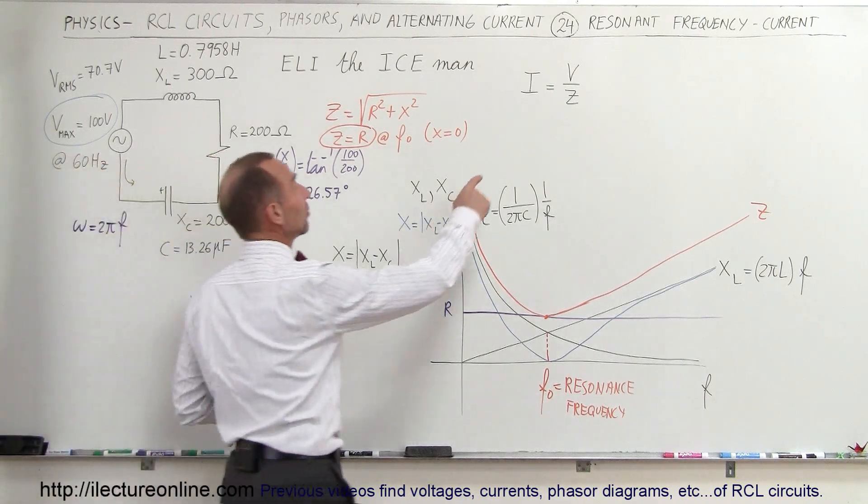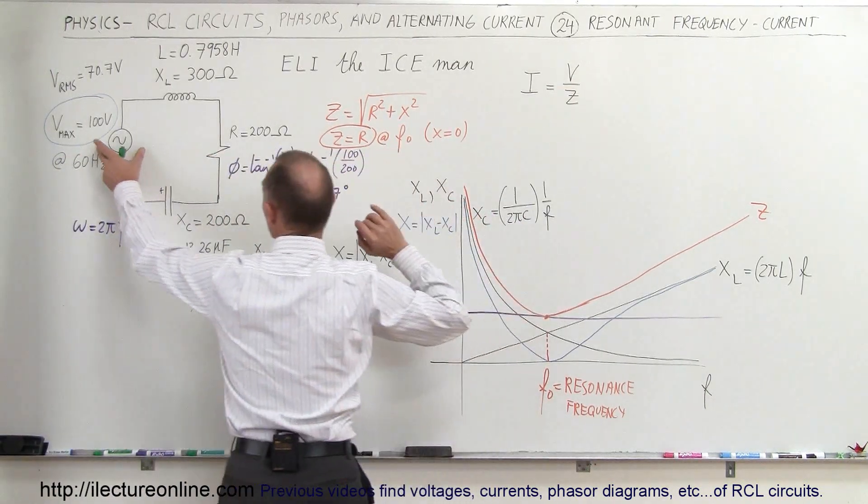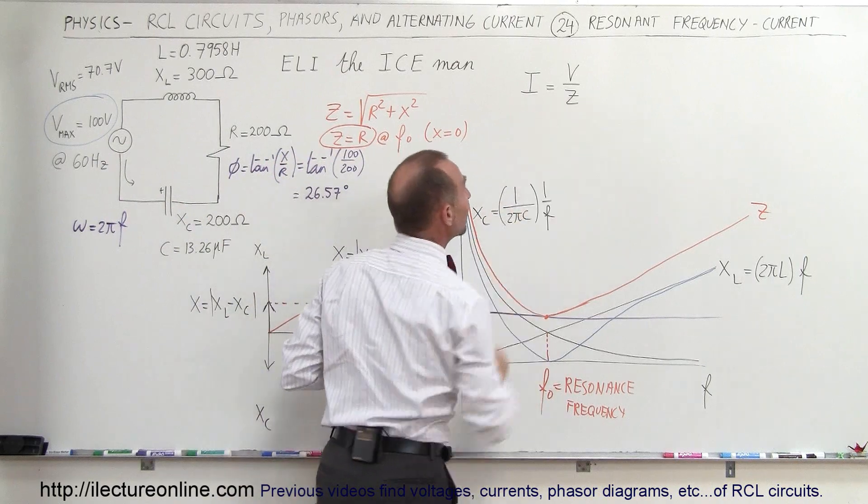Remember that the current in the circuit is equal to the voltage of the power supply divided by the total impedance of the circuit.